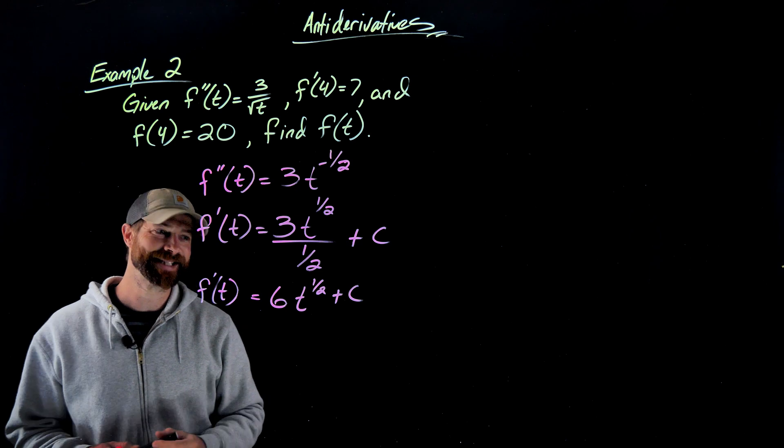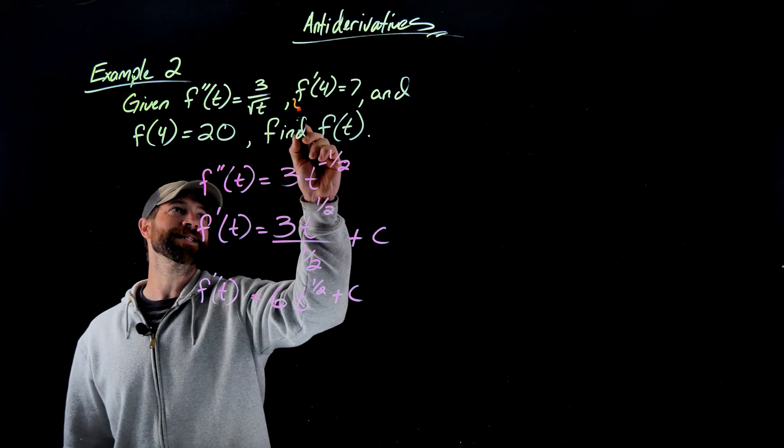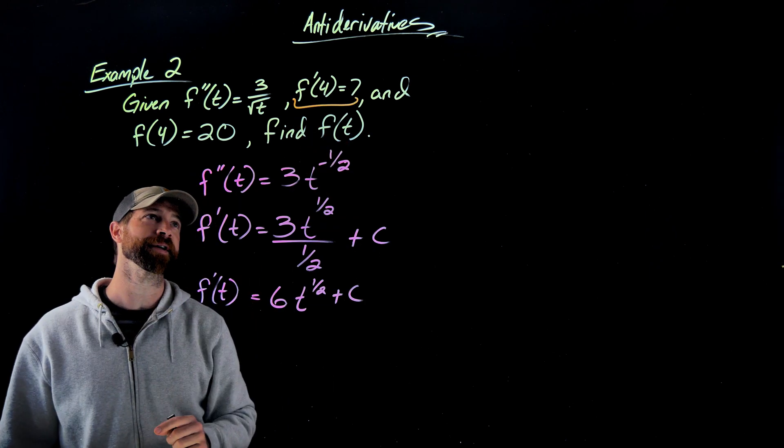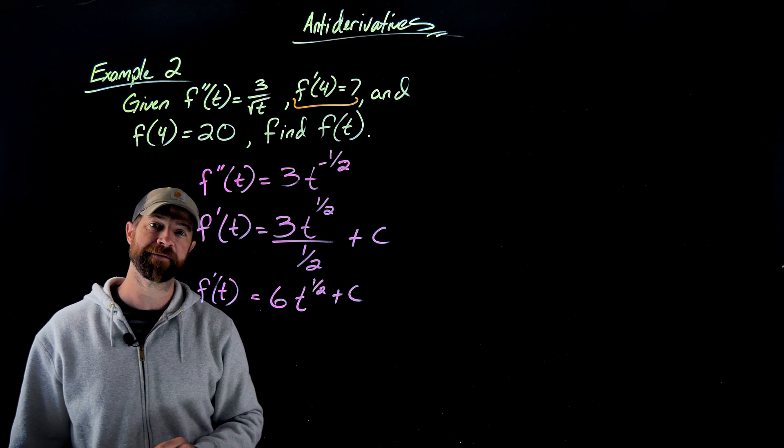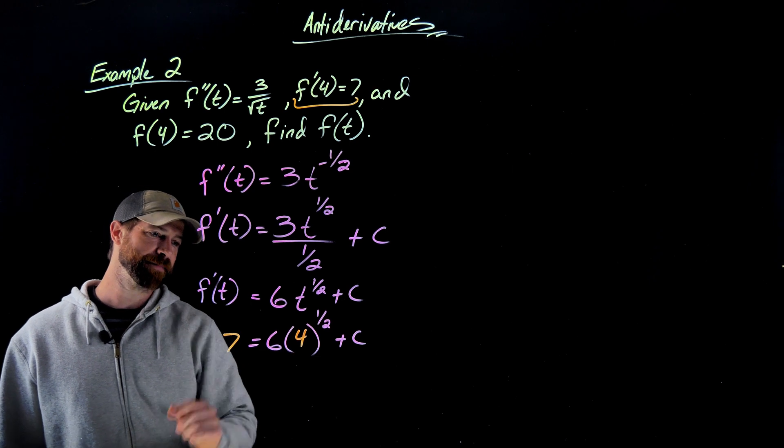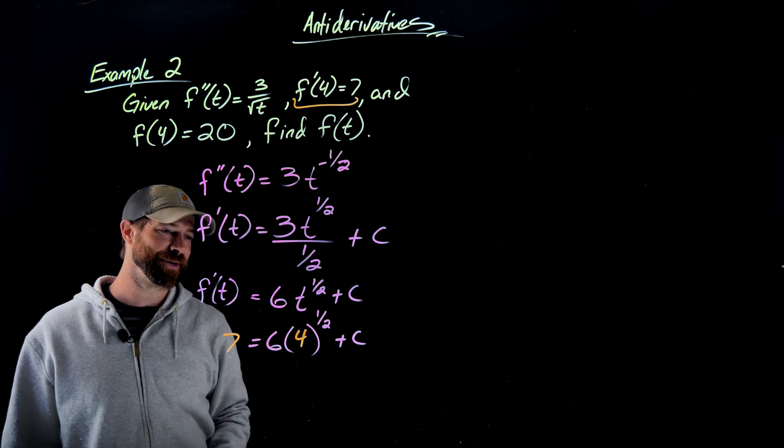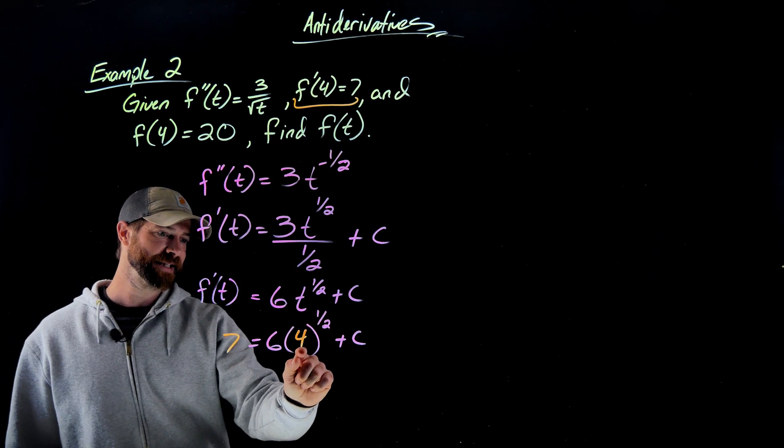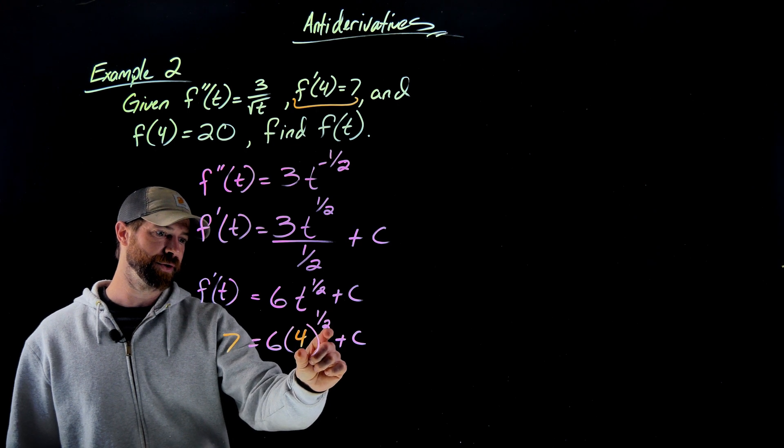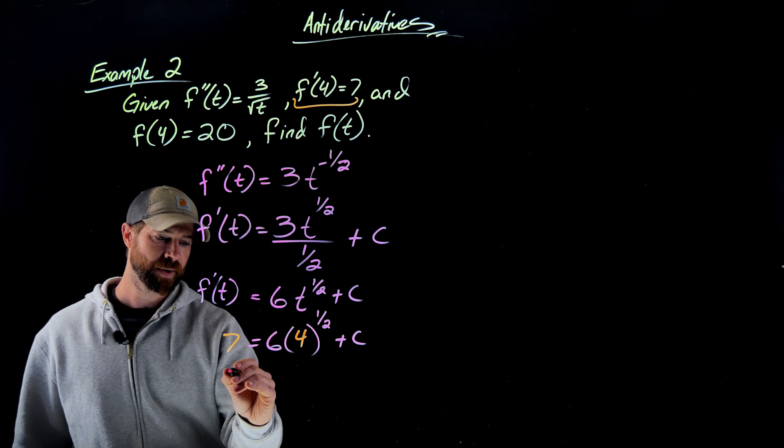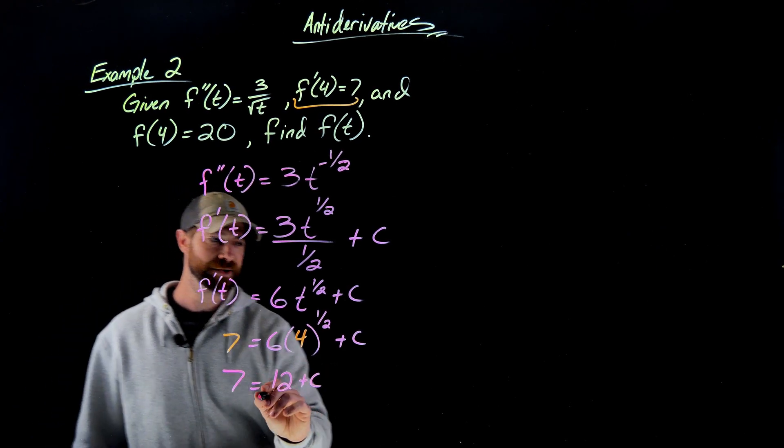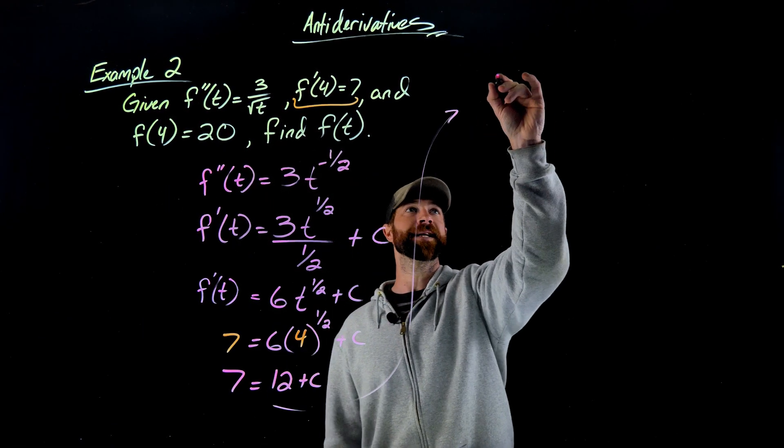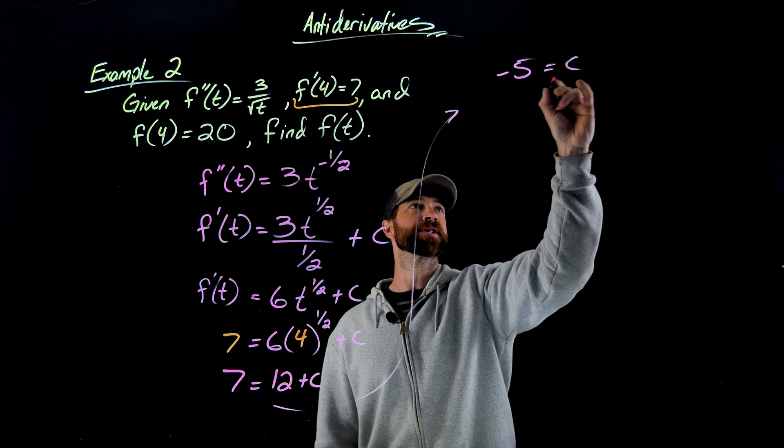Now to find my c value, I'm going to use this initial condition for the first derivative. I'm going to get out a 7 when I plug in a 4. So here I've plugged in 4 and got my output of 7 as given in this statement. Now to simplify this, this is the square root of 4 which is 2. 2 times 6 is 12. So I have 7 equals 12 plus c. Subtracting 12 from both sides would give me negative 5 equals c.